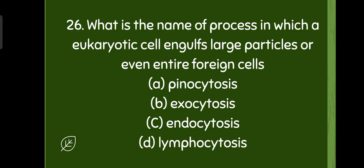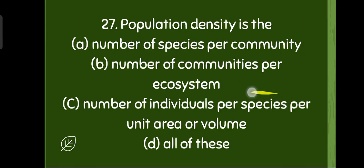Population density is the number of species per community, number of communities per ecosystem, number of individuals per species per unit area or volume, or all of these.